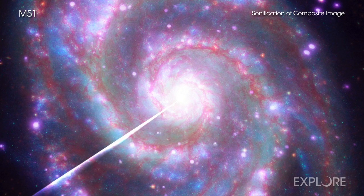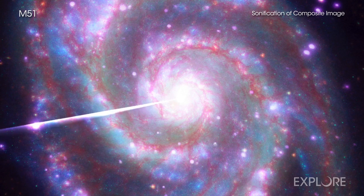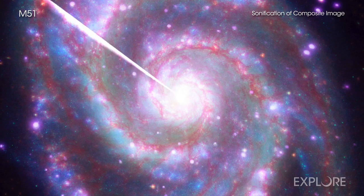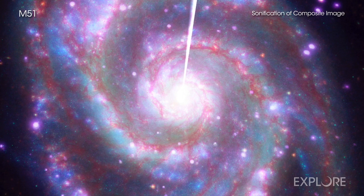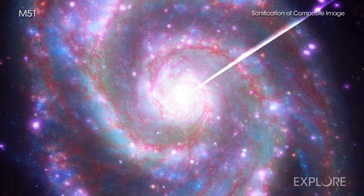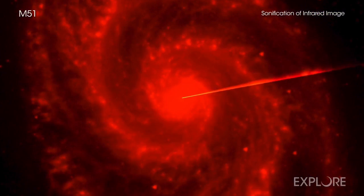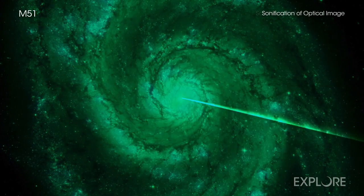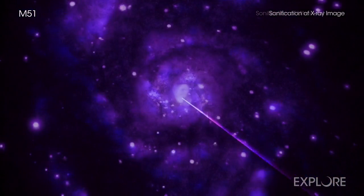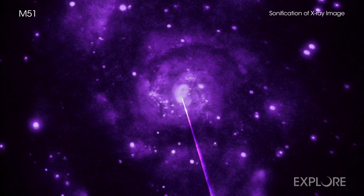As with the Cat's Eye, the sonification begins at the top and moves radially around the image in a clockwise direction. The radius is mapped to notes of a melodic minor scale. Each wavelength of light in the image—infrared, optical, ultraviolet, and X-ray, obtained from NASA telescopes in space—is assigned to a different frequency range.